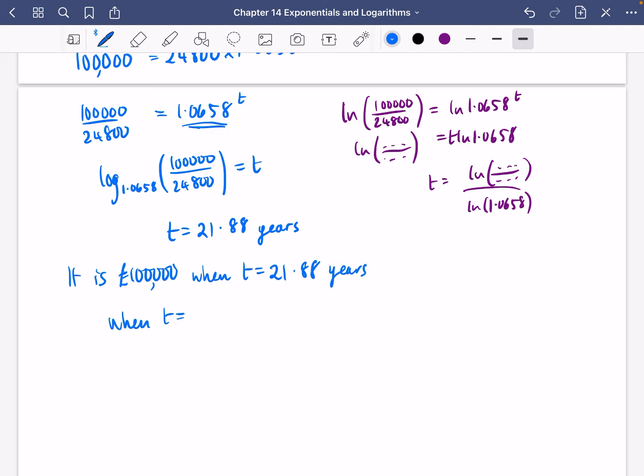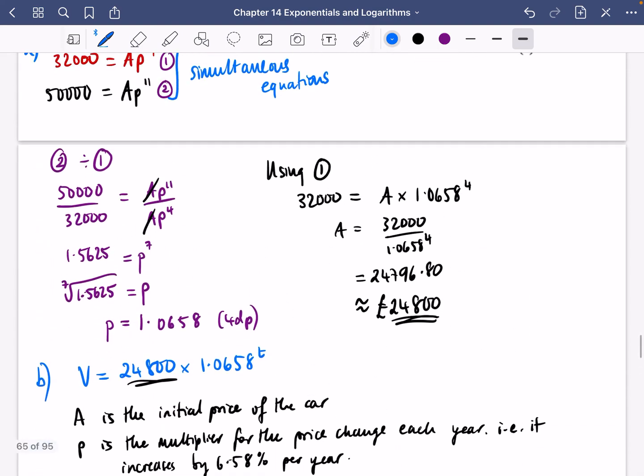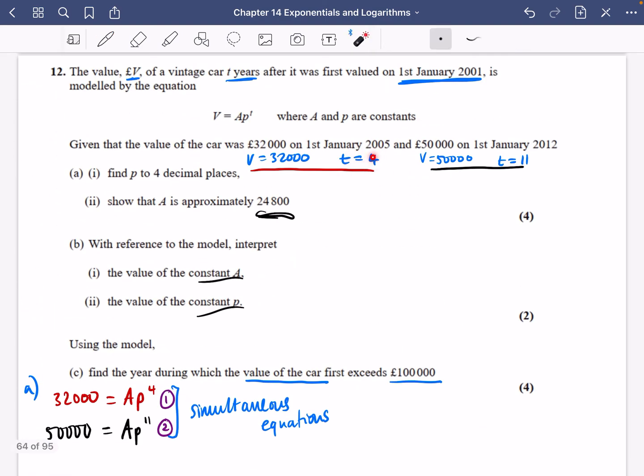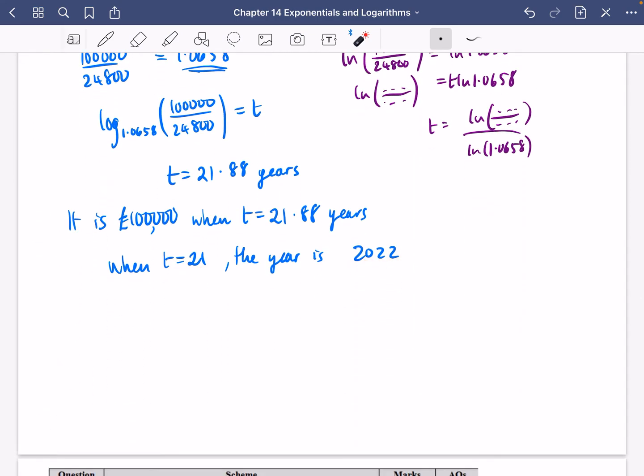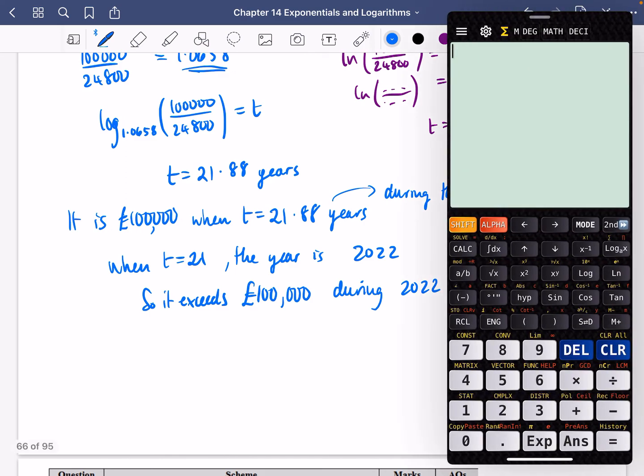When t = 21, the year is 2022, because when t was 4 the year was 2005, and when t was 11 it was 2012. It's always like one bigger than t. So when t is 21, the year is 2022, and it exceeds £100,000 during 2022 at 0.88 years, which is roughly 10 or 11 months in.